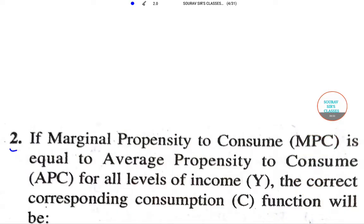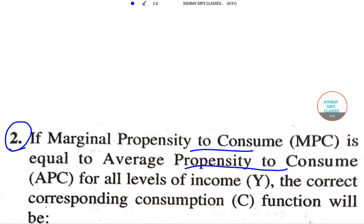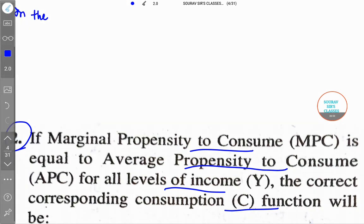The question we are going to start with today is question number two. It says: if the marginal propensity to consume is equal to average propensity to consume for all levels of income, then what will the correct corresponding consumption function be? We need to figure out the consumption function when this condition is satisfied. In the short period, let me reduce the ink size a little bit.